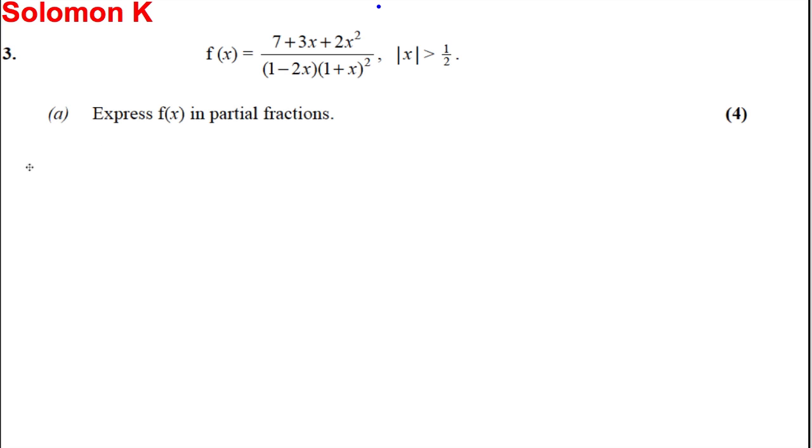So we need to write 7 plus 3x plus 2x squared divided by (1 subtract 2x)(1 plus x) all squared in partial fractions.